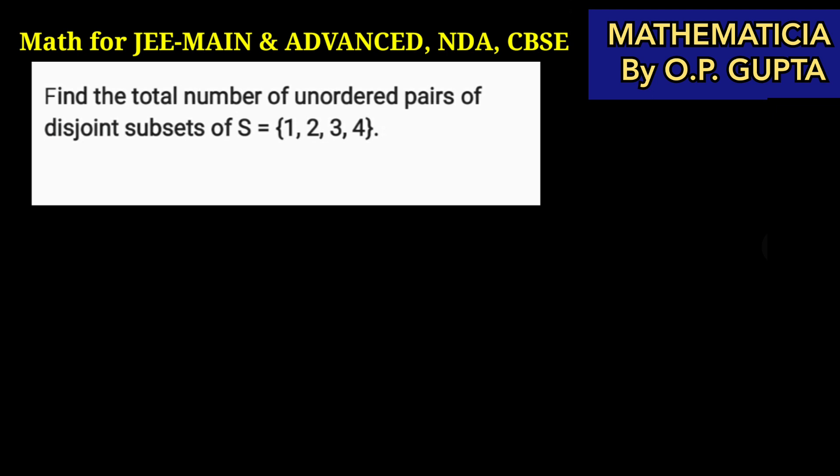Hello students, today we are going to solve this problem. It says find the total number of unordered pairs of disjoint subsets of set S which has these number of elements.